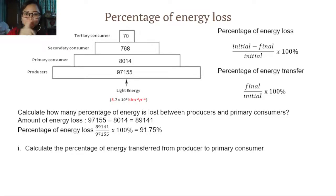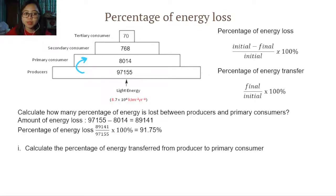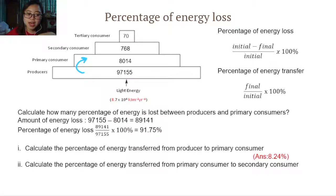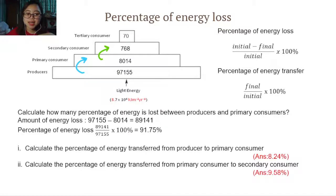Now pause the video and try to calculate the percentage of energy transferred from producer to primary consumer. The answer is 8.24%. Next, calculate the percentage of energy transferred from primary consumer to secondary consumer. The answer for question two is 9.58%.